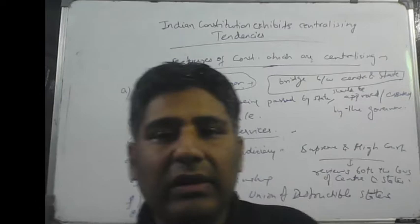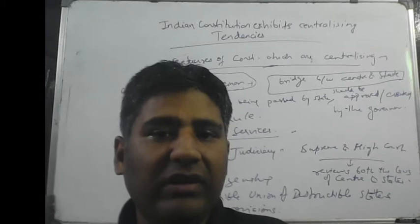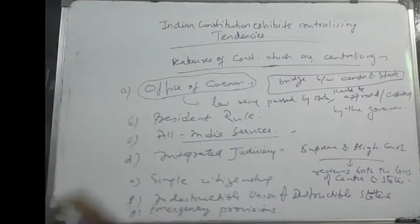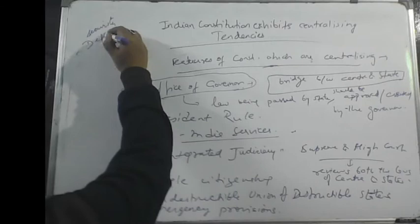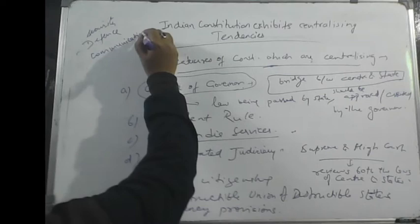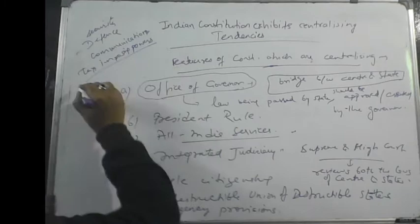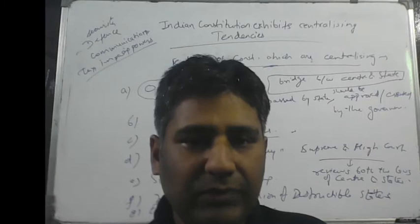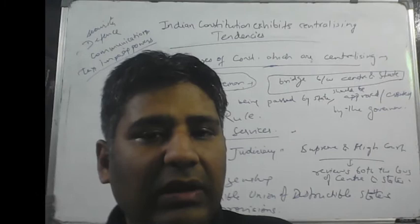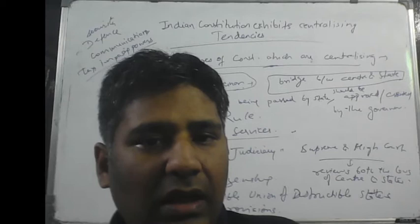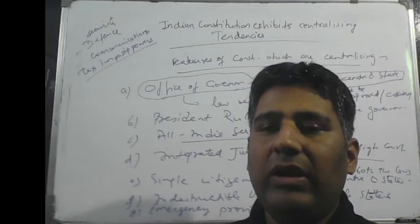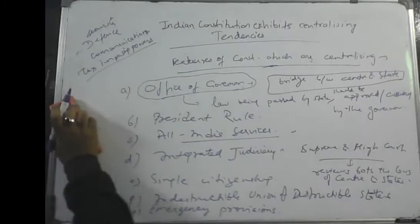Various subjects in the Union List are of national importance, for example subjects of security, defense, communication, and tax-imposing powers. The IGST on interstate transactions is imposed by the center but distributed between the center and the states. So you can see the centralizing feature in our Constitution.